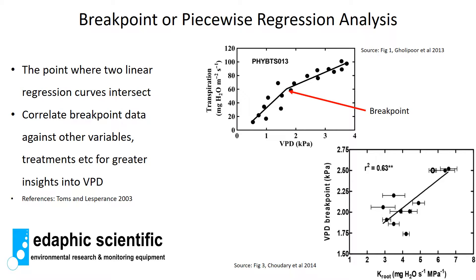Another way to analyze sap flow and VPD data is break point or piecewise regression analysis. This involves applying two linear curves at different parts of the sap flow versus VPD relationship, and where those two linear curves intersect is called the break point. So here is one linear curve and here is a second, and at their intersection is the break point.